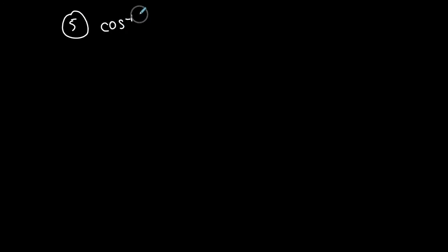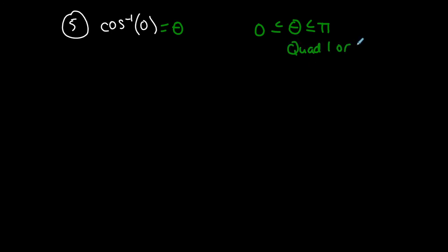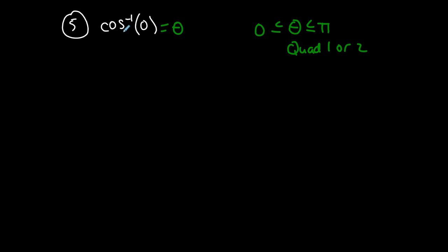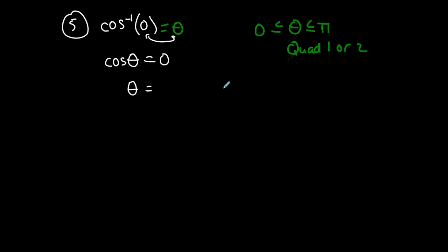Cosine inverse of zero. For cosine, the angle is limited between zero and pi — quadrants one or two. Rewriting: cosine of theta equals zero. Where is cosine zero? That's at pi over two. Since pi over two falls within quadrants one or two, the answer is pi over two.